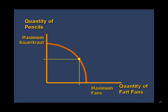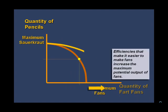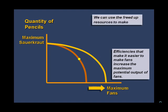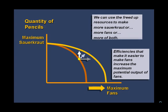How can we get more? By becoming more efficient or more productive. Getting more resources allows more production. Trading with other economies allows more specialization. Improvements in technology lower the cost of production. More efficient fan production frees up resources, which we can use to make more sauerkraut, more fans, or more of both.